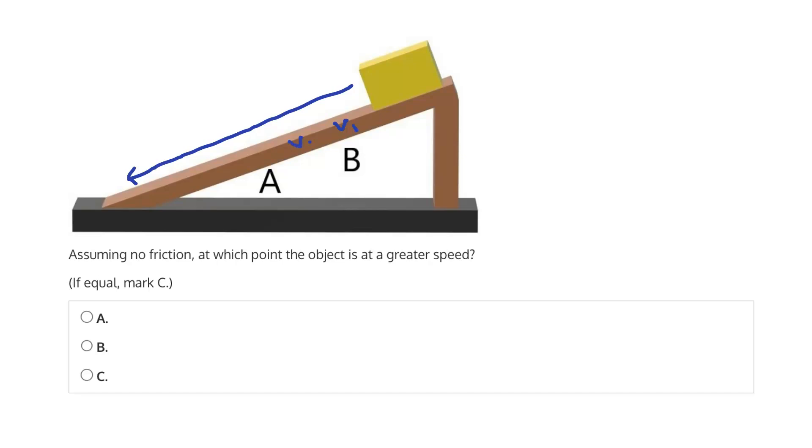So at each point in its journey moving further along, the speed will progressively increase until it finally reaches the bottom. So therefore, because A is closer to the bottom than B, we can expect its speed at point A to be faster. So the answer is A.